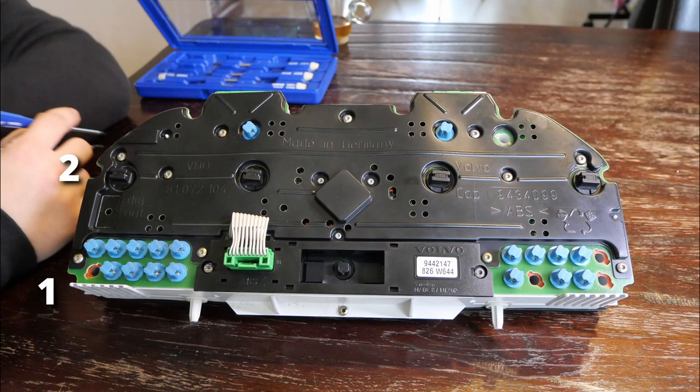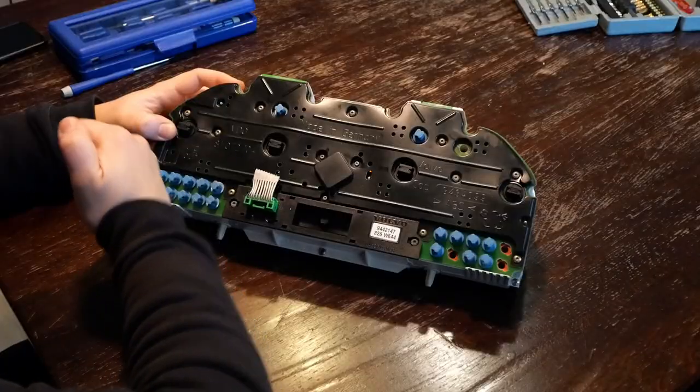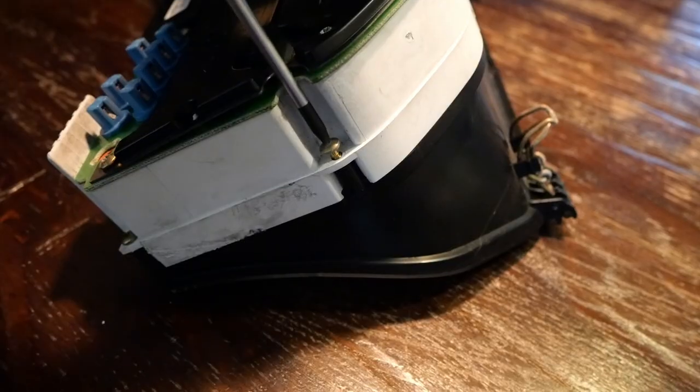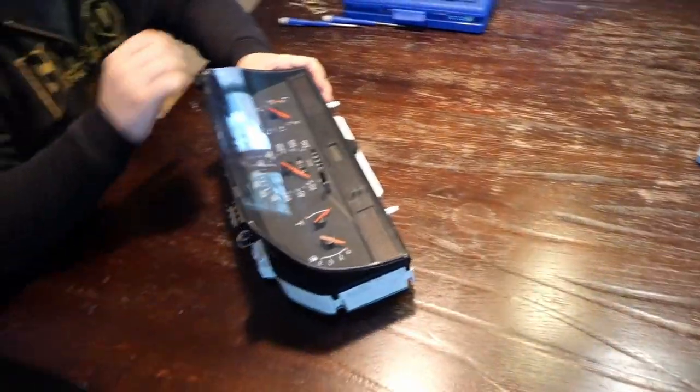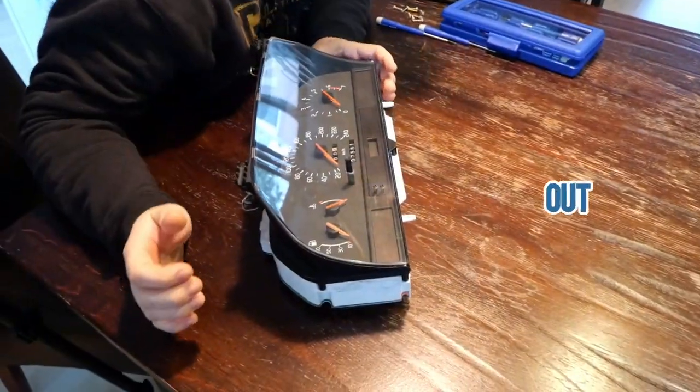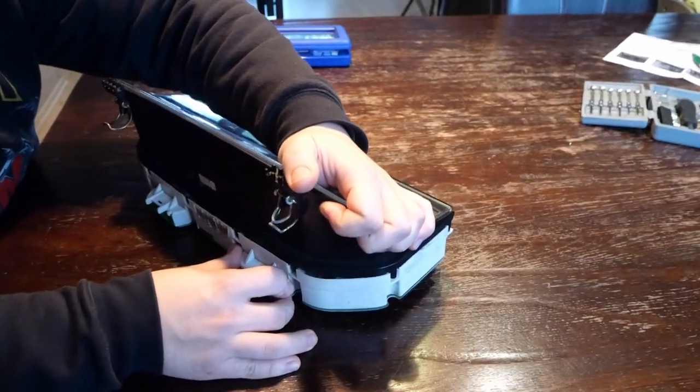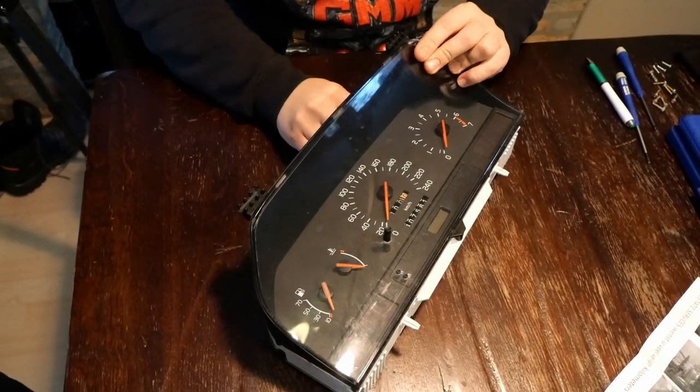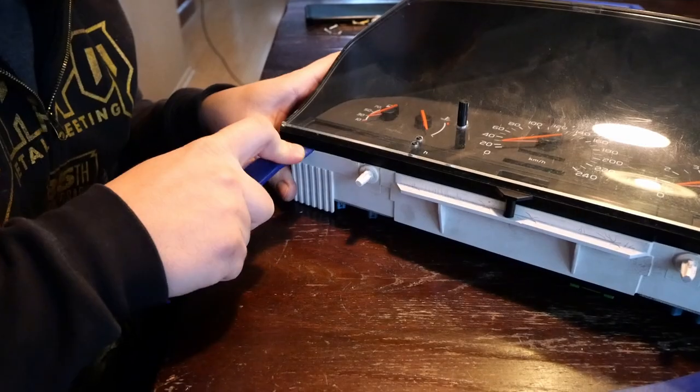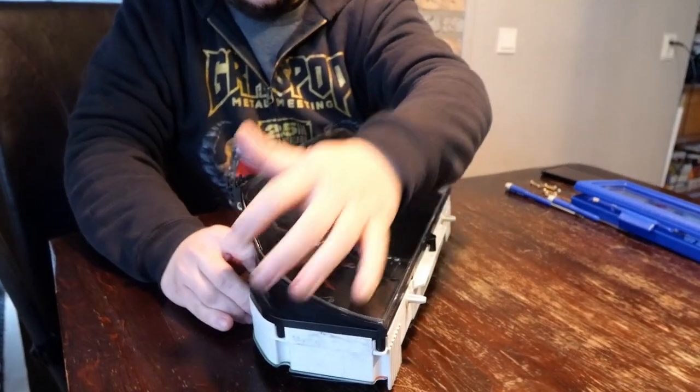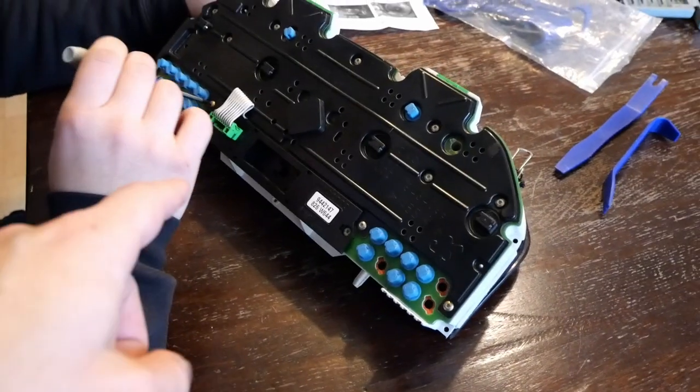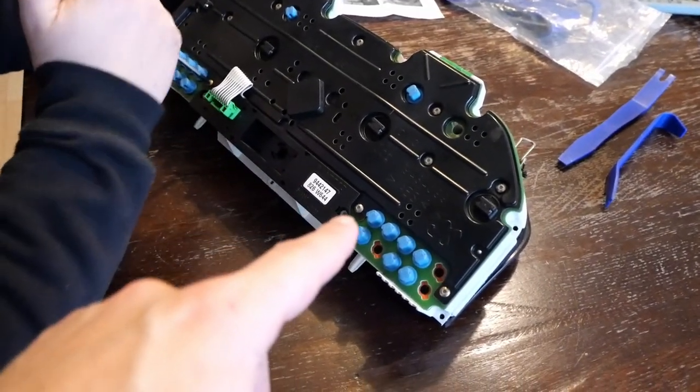First thing we did was to remove the nine T10 screws around the edge. Now we should be able to remove the front if we got all screws out that is. Hmm did we forget one or two? Hmm yes indeed we did. There are two more T10s right beside the warning light plugs.